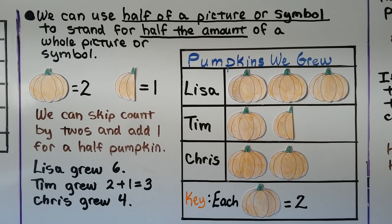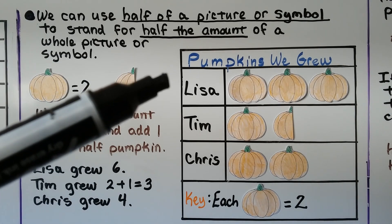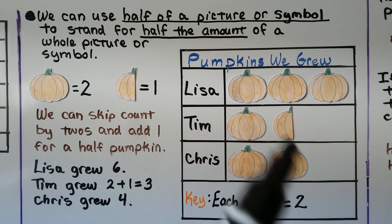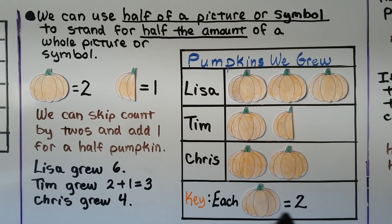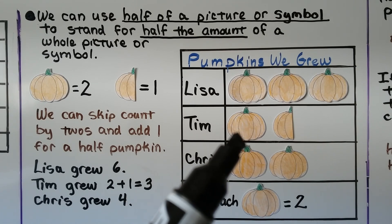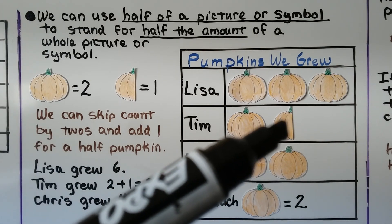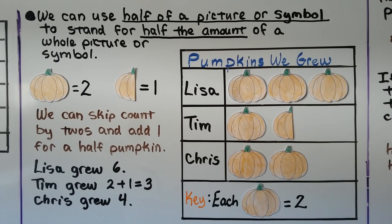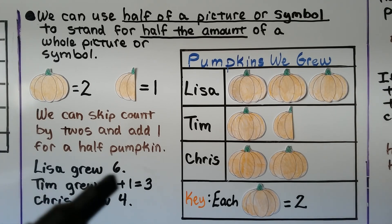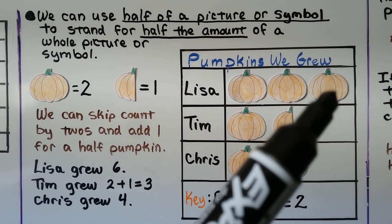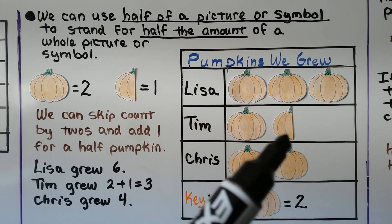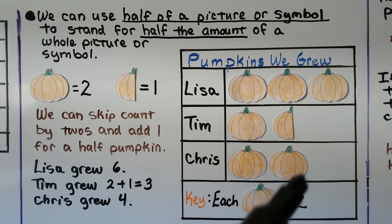We can use half of a picture or symbol to stand for half the amount of a whole picture or symbol. This picture graph is about pumpkins we grew — Lisa, Tim, and Chris. The key tells us that each pumpkin is equal to two. Tim has a full pumpkin and a half pumpkin. If each full pumpkin equals two, then a half one equals one. So Lisa grew six, Tim grew three (two plus one for the half), and Chris grew four pumpkins.